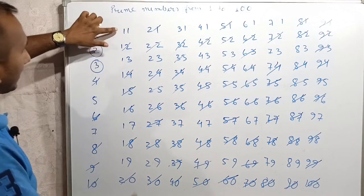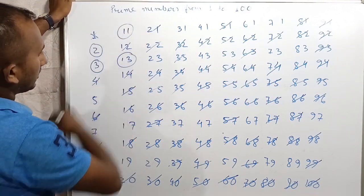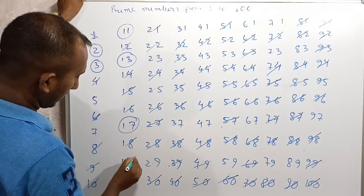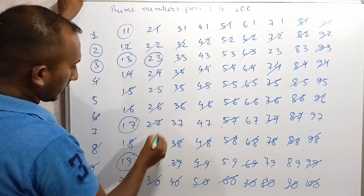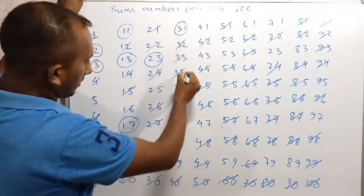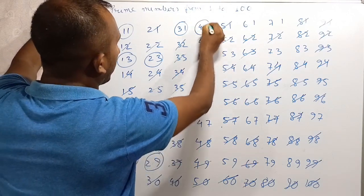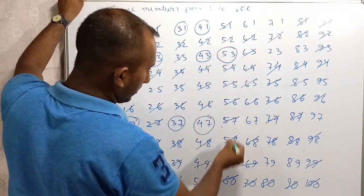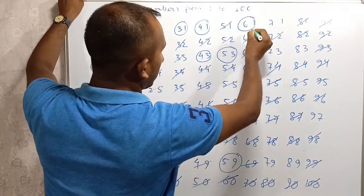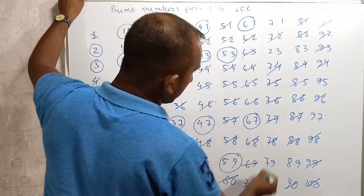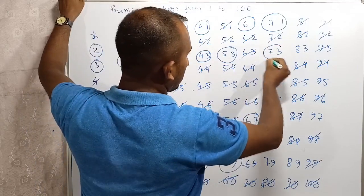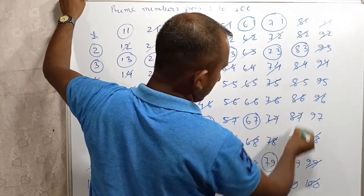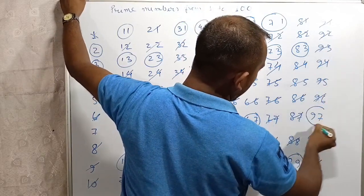The numbers which are not cut — those are the prime numbers. 11, 13, 17, 19, 23, 29, 31, 37, 41, 43, 47, 53, 59, 61, 67, 71, 73, 79, 83, 89 — you will not cut those numbers.